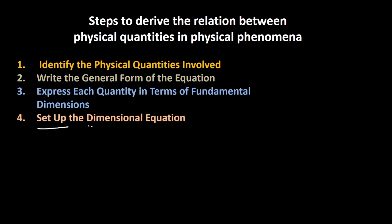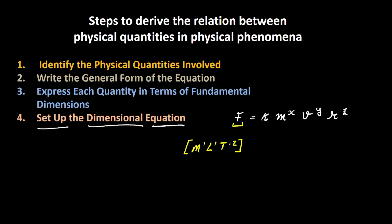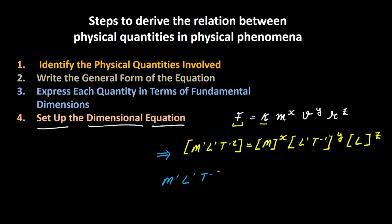Now we set up the dimensional equation: F = k · Mˣ · Vʸ · Rᶻ, where k is a dimensionless constant. So M¹L¹T⁻² equals Mˣ · (L¹T⁻¹)ʸ · L^z. Simplifying, this becomes M¹L¹T⁻² = Mˣ · L^(y+z) · T^(−y).